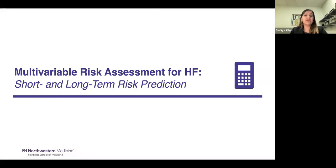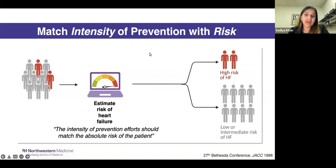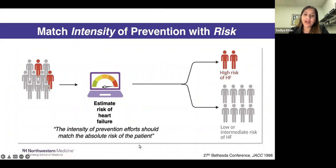The first approach is multivariable risk assessment — how do we approach short and long-term risk prediction? This principle was first put forth at the 27th Bethesda conference over two decades ago and is the cornerstone of primary prevention for atherosclerotic disease. In a given population there is a variance of risk, and we want to use multivariable risk tools to identify those at high risk for heart failure and match the intensity of prevention efforts to the absolute risk of the patient.